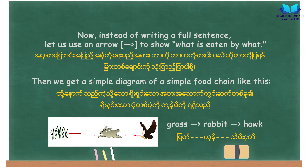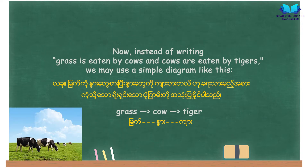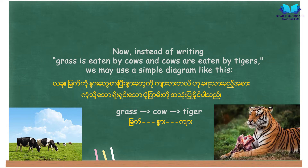Instead of writing a full sentence, let us use an arrow to show what is eaten by what. Then we get a simple diagram of a simple food chain like this: grass to rabbit, and rabbit to hawk. Instead of writing grass is eaten by cows and cows are eaten by tigers, we may use a simple diagram like this: grass to cow, and cow to tiger.